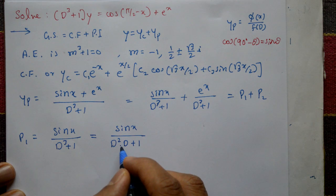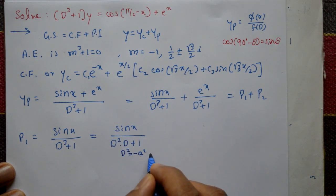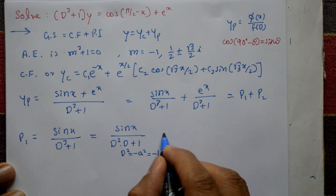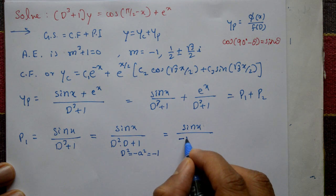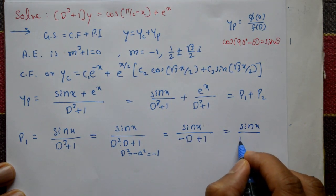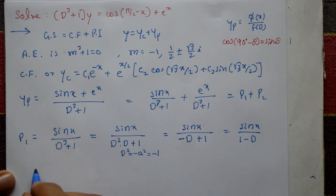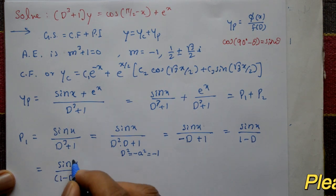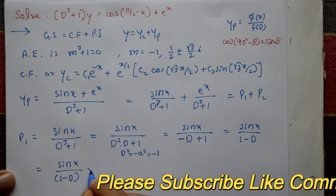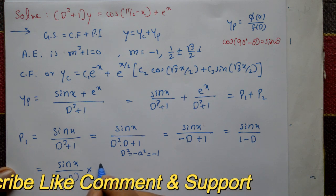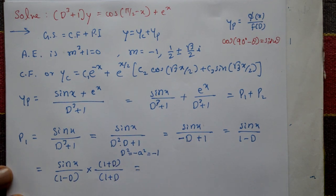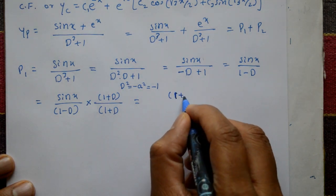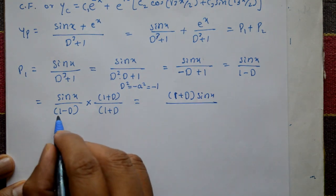Here a = 1, so using Type 2: D² = −a² = −1. This gives sin x / (−D + 1), or sin x / (1 − D). Since it is not possible to directly apply the Type 2 sin(ax) rule here, we multiply and divide by (1 + D), giving (1 + D) sin x / [(1 − D)(1 + D)], which equals (1 + D) sin x / (1 − D²).